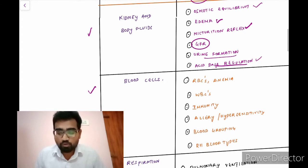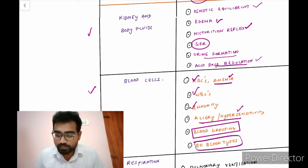So, blood cells, you should know about the RBCs, WBCs, and anemias, which you will come across in pathology as well as in general medicine. And the immunity, the hypersensitivity, blood groupings, very important. The RH blood types, very important.